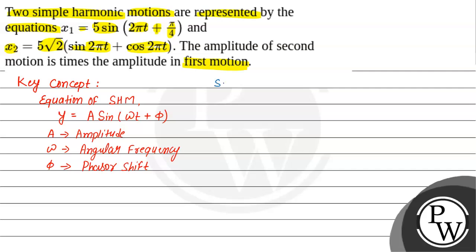Let's write the solution. For the first equation, comparing with the standard form, ω = 2π and π/4 is the phase shift. From here, if we extract the amplitude, a1 will be 5.